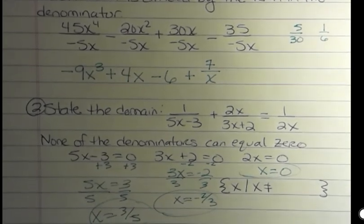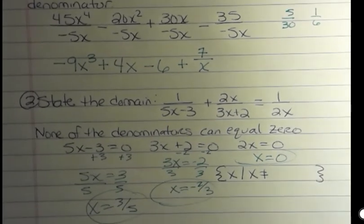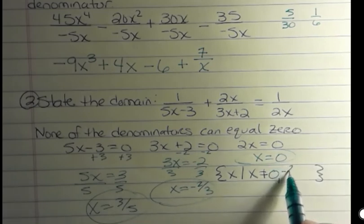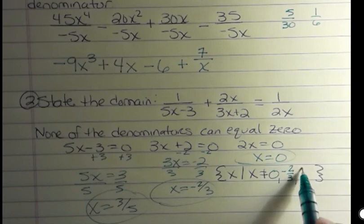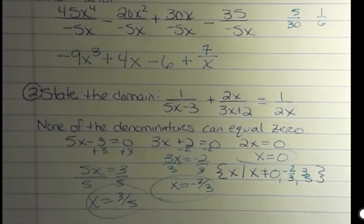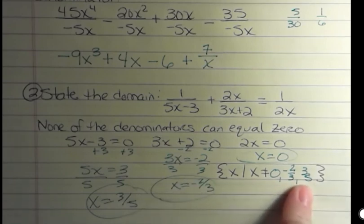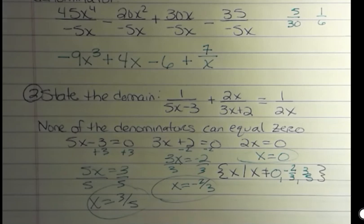So these are the three values that I can't let my domain be. It could be anything else in the universe, but it can't be those three values. So I would state my answer, the set of all x, that's that x does not equal 0 or negative 2 thirds or 3 fifths. The order here is not important. Those three values don't have to be in any particular order. But the idea is that we can't allow, if we find an answer and it's one of these, we can't use it. Because we can't use something that causes the denominator to be 0.